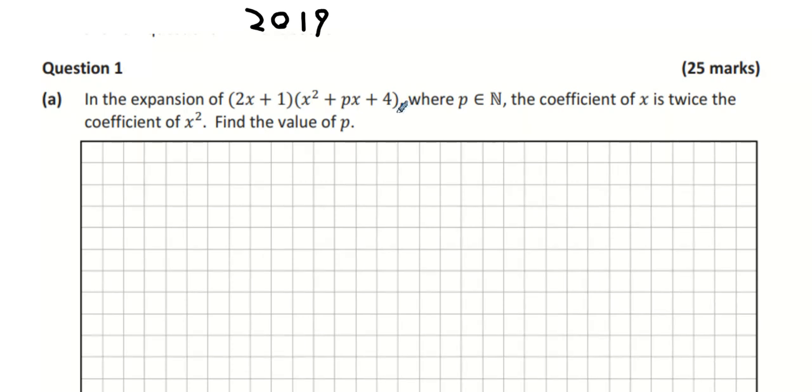It's easy to be one of the easiest part one questions ever. So we're just going to expand, in the expansion of 2x plus 1 multiply by x squared plus px plus 4, where p is a natural number, the coefficient of x is twice the coefficient of x squared.